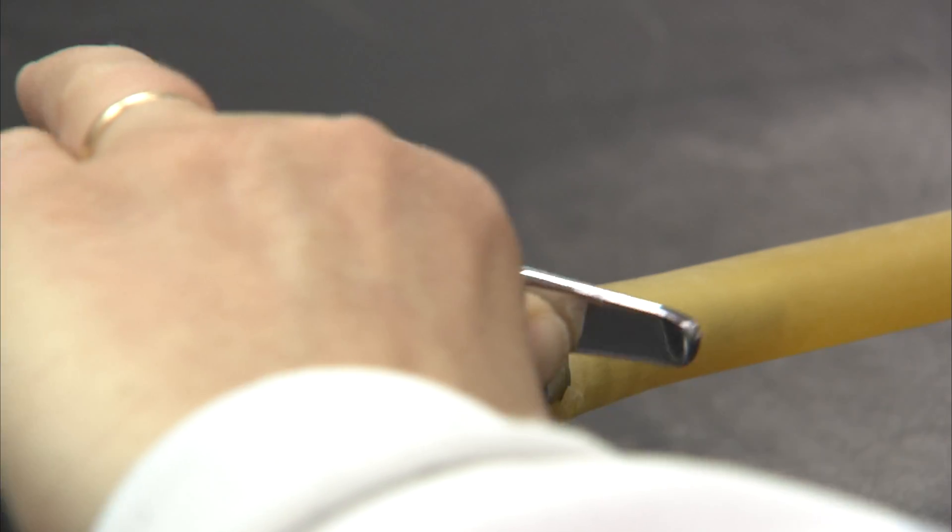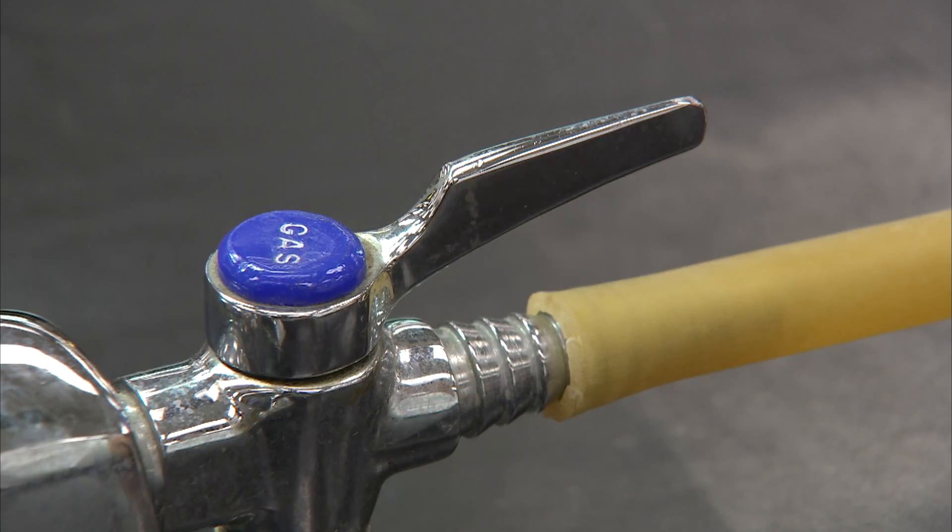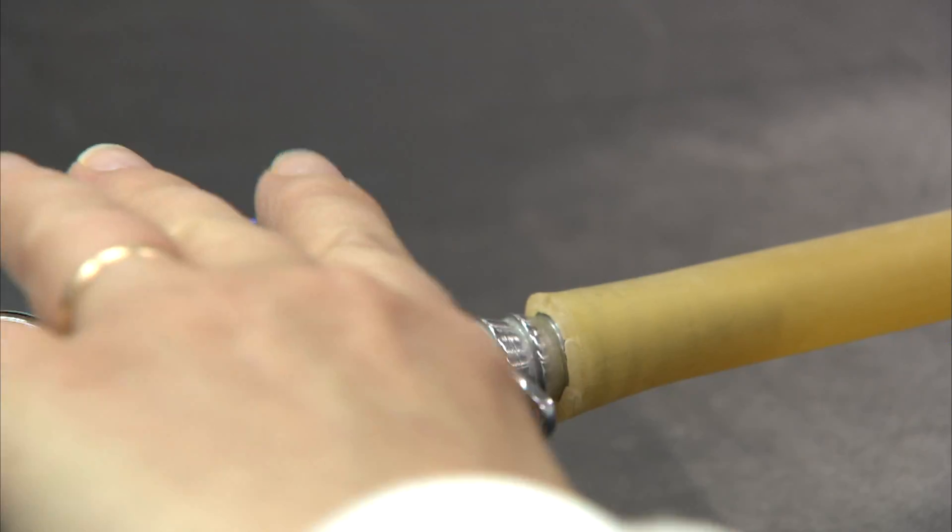The gas valve is fully open when the lever points at the outlet hose. To turn the gas off, it can be rotated 90 degrees in either direction.